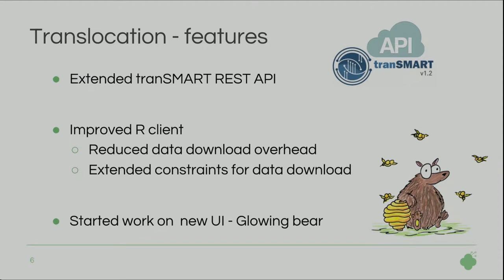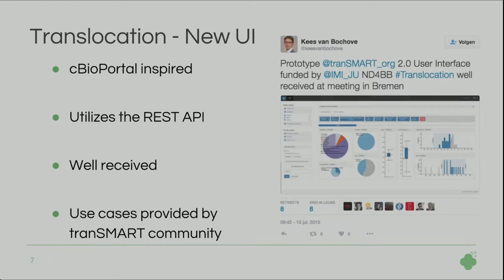They reduced the data download overhead to improve performance, and extended the constraints — so now you have the option to say, for example, I only want to download data for this particular biomarker or for this particular patient set. We also started working on the new UI, whose working name is GlowingBear. The new UI is cbio portal-inspired, uses an interactive framework, similar web technologies, and is built upon the REST API, so it's completely separated from Transmart core.